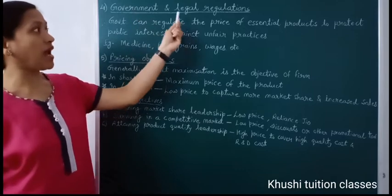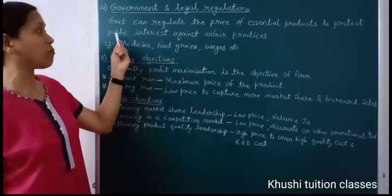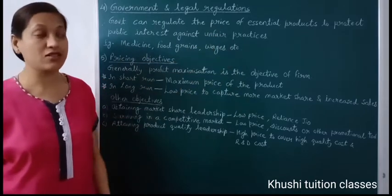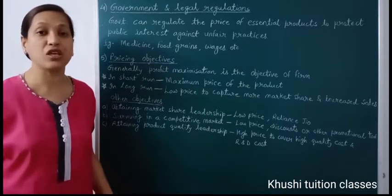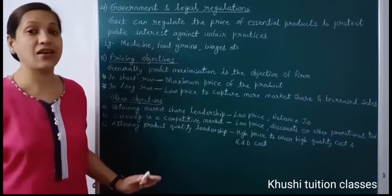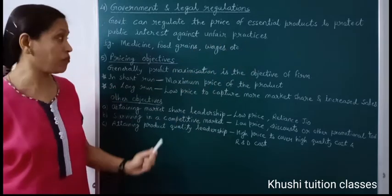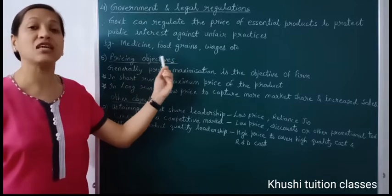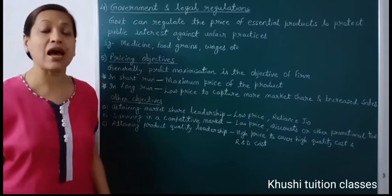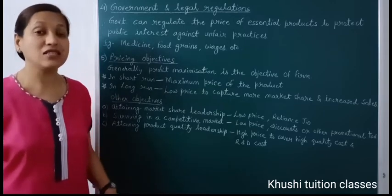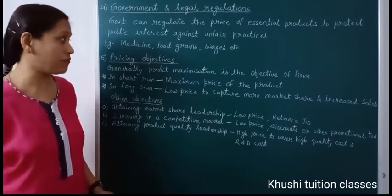The fourth factor is government and legal regulations. Government can regulate the price of essential products to protect public interest against unfair practices. Government जितने भी essential necessary products और services होती है, उनका price decide और regulate कर सकती है, ताकि seller unfair trade practices ना करें। For example, medicine, food grains — जिसका maximum price government decide करती है। Wages के लिए government ने Minimum Wages Act और Payment of Wages Act बनाया है, जिसके अनुसार labours की minimum wages decide होती है।